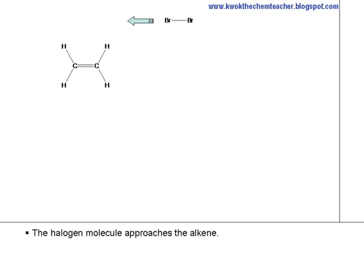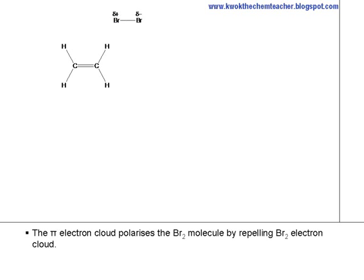The halogen molecule approaches the alkene. The pi electron cloud polarizes the bromine molecule by repelling the bromine's electron cloud.